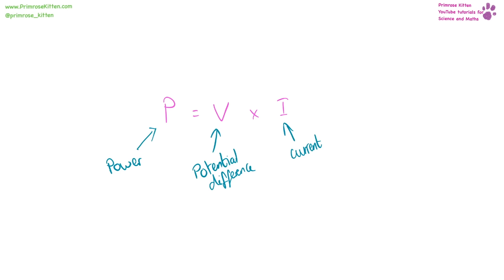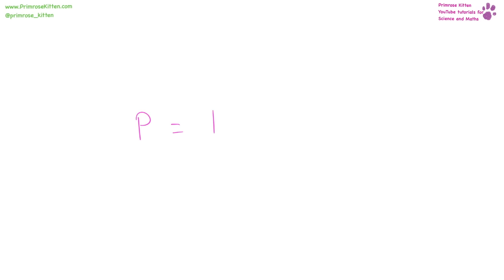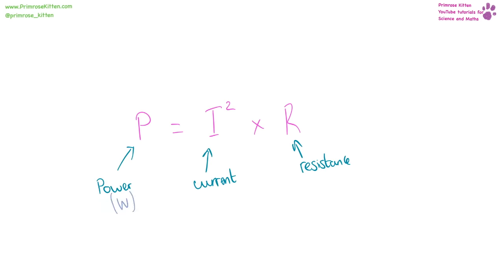Power is equal to potential difference times current. Power is measured in watts (capital W), potential difference is measured in volts, and current is measured in amps. Power is also equal to current squared times resistance — again power is in watts, current in amps, and resistance in ohms.